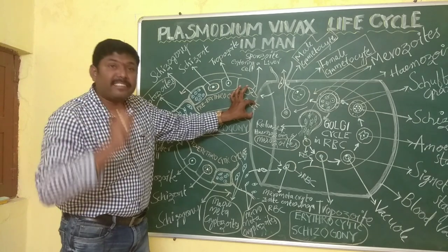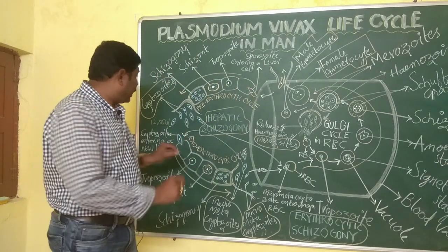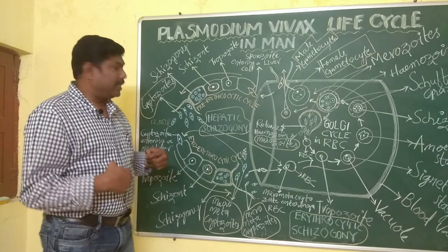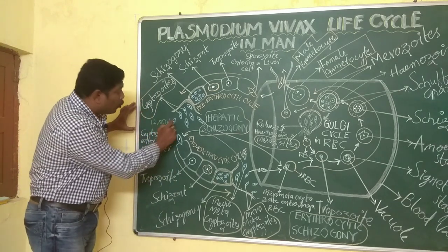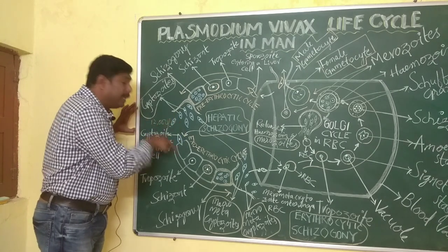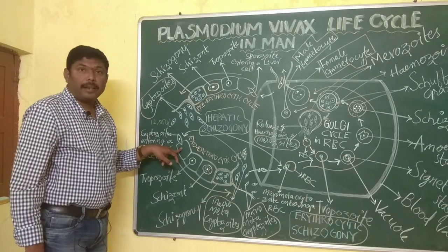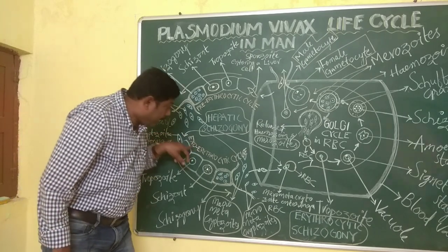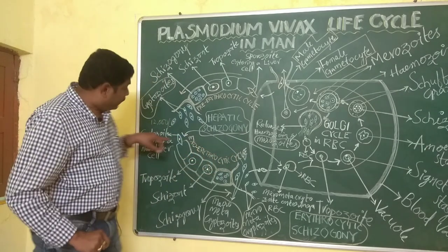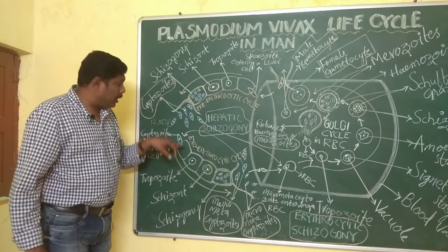To complete the pre-erythrocytic cycle, it takes 8 days. Now, what we have to understand is that the cryptozoite which is formed enters into the fresh liver cell and starts the exo-erythrocytic cycle.